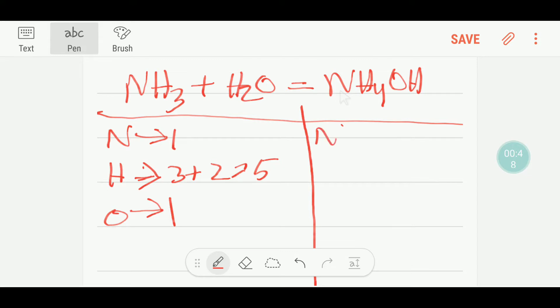On the right hand side we have one nitrogen, we have four hydrogen plus here we have one hydrogen, that gives us five hydrogen. Here we have one oxygen. So to balance this reaction, we'll check the number of atoms.